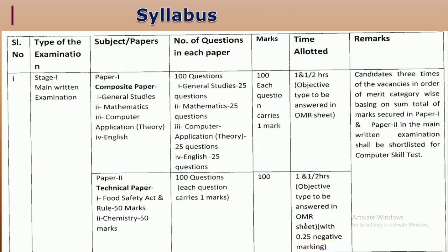With concern to the syllabus, there are three important stages. Stage one is the mandatory examination with two papers: the first is the Composite Paper and the second is the Technical Paper. The Composite Paper carries 100 marks with 25 questions for each of four sections — General Studies, Mathematics, Computer, and English. The Technical Paper has 100 questions of one mark each, to be completed in one and a half hours, OMR-based.